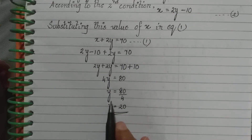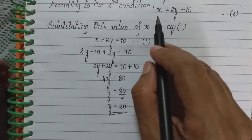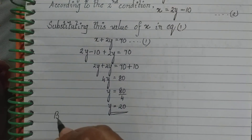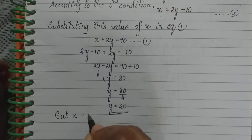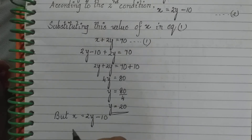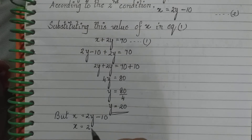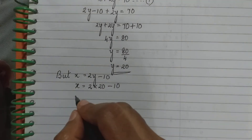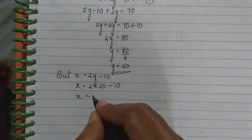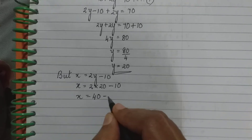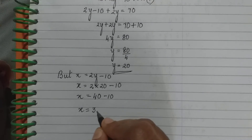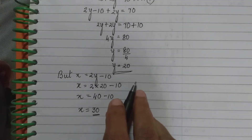Now to find X, we use Equation 2: X = 2Y − 10. Substituting Y = 20: X = 2 × 20 − 10 = 40 − 10 = 30. So X = 30 and Y = 20.